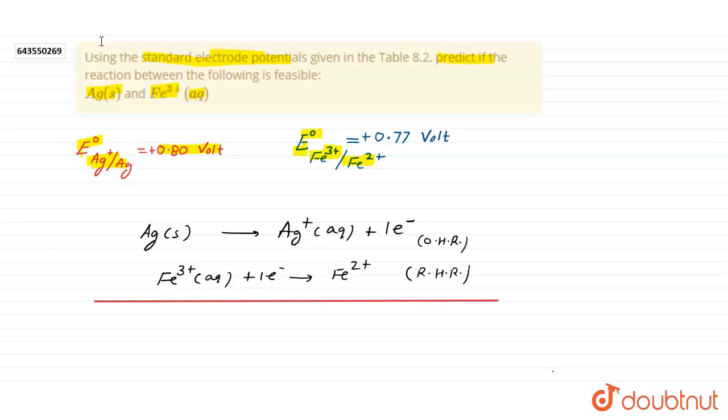What is the overall reaction would be? Ag solid plus Fe3 plus aqueous give us Ag plus aqueous plus Fe2 plus aqueous. Then what is the E naught cell, EMF of cell for these given atoms or ions?